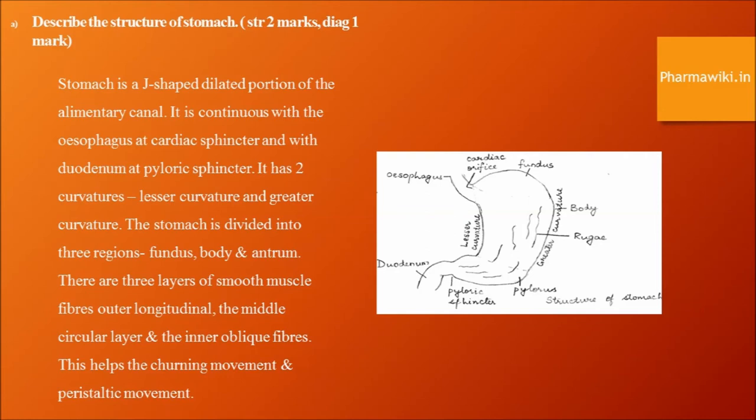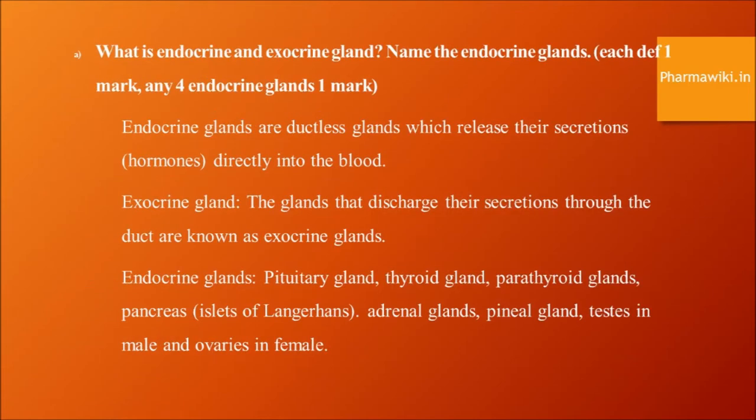What are endocrine and exocrine glands? Endocrine glands are ductless glands which release their secretions directly into the blood. Exocrine glands have ducts and discharge their secretions through those ducts. Endocrine glands include the pituitary gland, thyroid gland, parathyroid gland, pancreas, adrenal glands, pineal glands, testes in males, and ovaries in females.